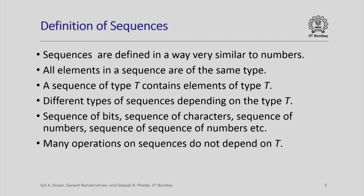You can have a sequence of bits where each element is a single bit, or you can have a sequence of characters, or a sequence of numbers, or a sequence of sequences of numbers. You can have a sequence where each element is itself a sequence of numbers — this will in fact be like matrices, as we will see later. A matrix can be thought of as a sequence of sequences of numbers. There are many operations on sequences which actually do not depend on what the type of the elements in the sequence are.